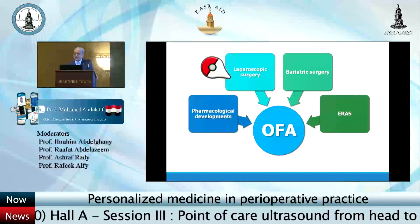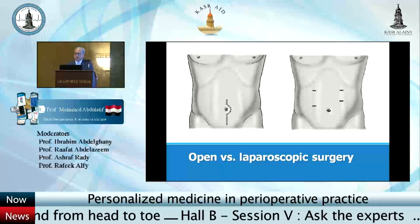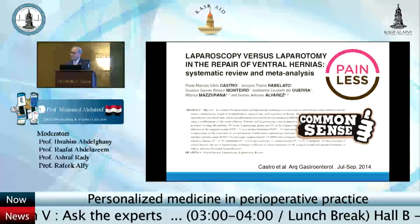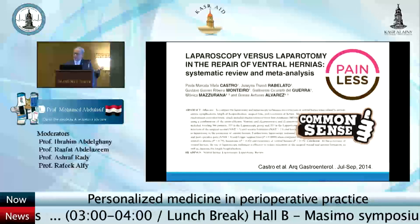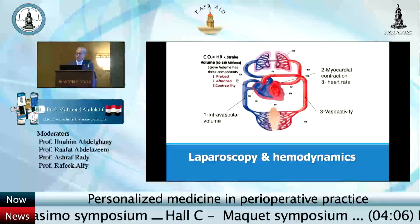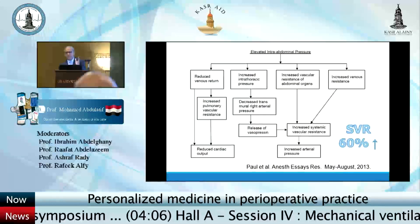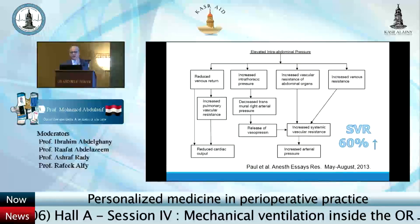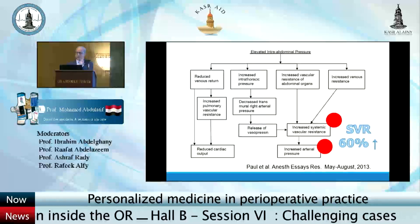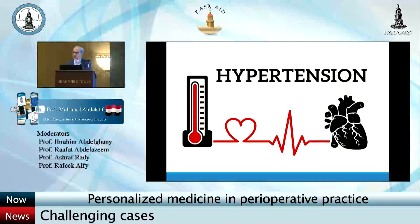The second triggering factor for opioid-free anesthesia is laparoscopic surgery. Most abdominal surgery is now done laparoscopically, and it is common sense that laparoscopy is associated with less pain, creating potential for opioid-free anesthesia — supported also by systematic review. The hemodynamics of laparoscopy are very peculiar. Systemic vascular resistance increases by 60%, and if you use balanced opioid-based anesthesia in laparoscopic surgery you will consistently get hypertension.